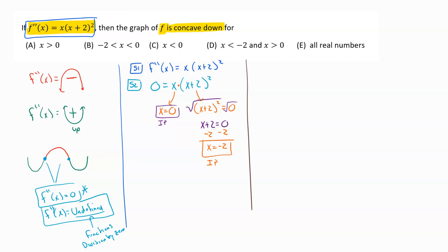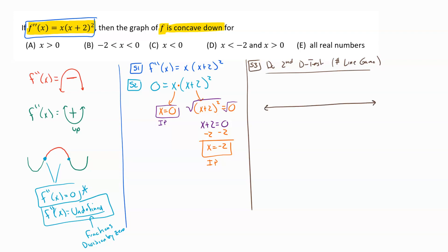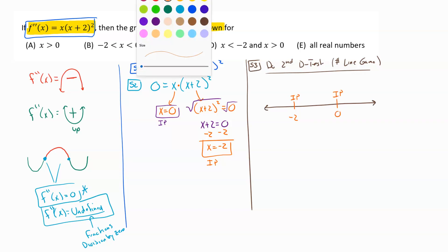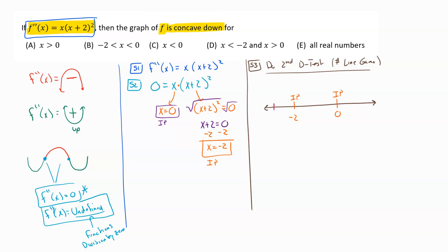Step three is the second derivative test — what I refer to as the number line game. We draw out our number line and mark our inflection points: one at negative two and one at zero. Now we choose test values from each region: negative three to the left of negative two, negative one between negative two and zero, and one to the right of zero.